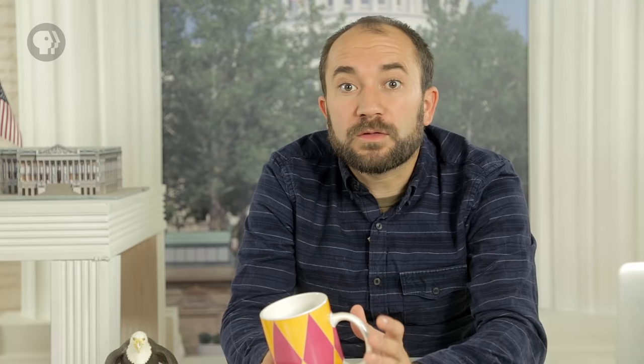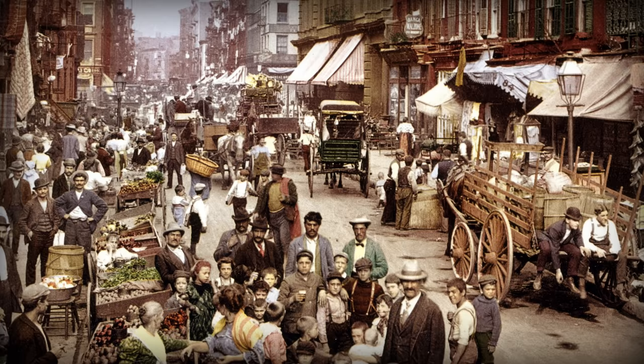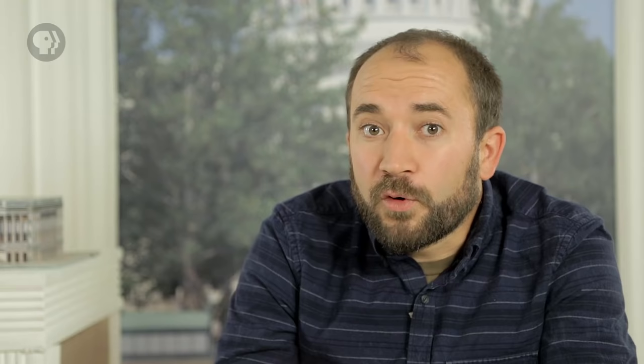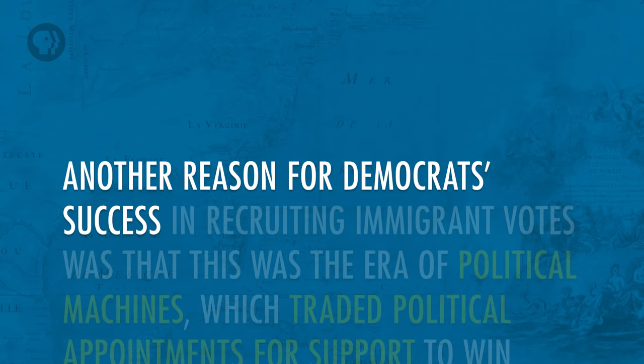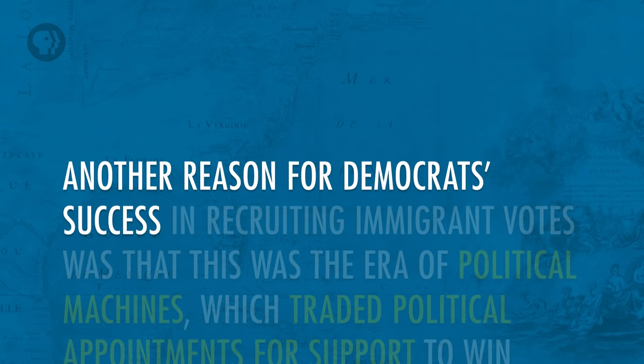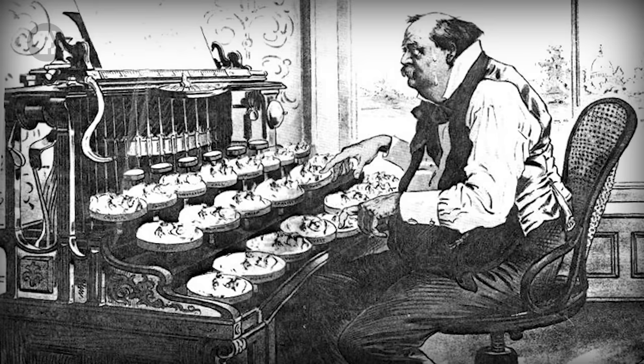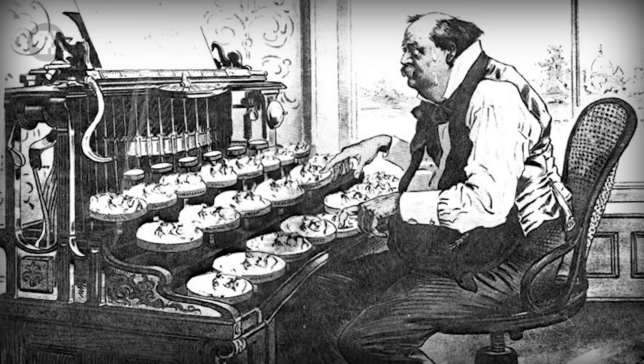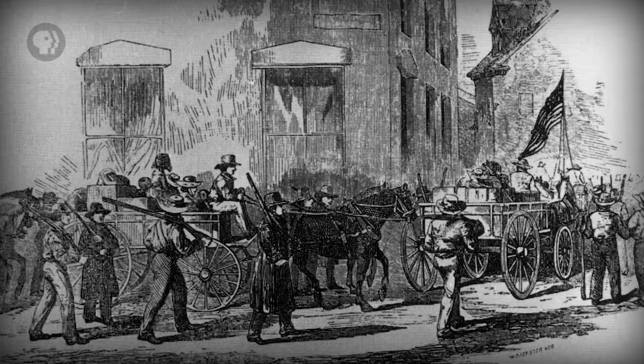In terms of political parties, this was when the Southern states all tilted towards the Democratic Party, largely because Republicans were, correctly, seen as being responsible for ending slavery. Democrats during the third party system were a bit of an odd mix. Their strength came from white, largely racist Southerners, and working-class immigrants in the North, many of whom gravitated to the Democrats because the Republicans tended not to like immigrants or alcohol. The era of political machines traded political appointments for support to win elections and maintain power. The most famous of these machines tended to be in big cities with large immigrant populations, like Boston and New York, and they were mostly Democratic.